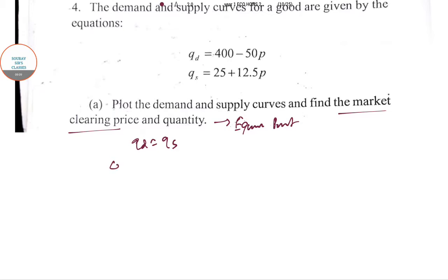Qd = Qs, so 400 - 50P = 25 + 12.5P. This gives 375 = 62.5P, so after division you get P = 6.